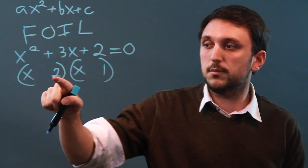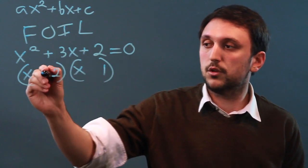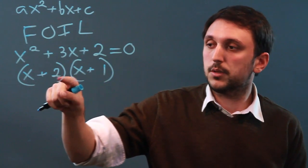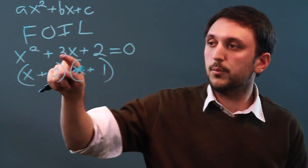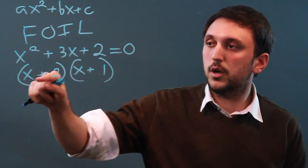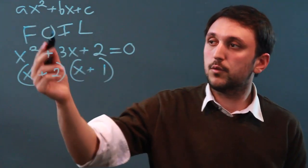So we know it's plus 2, so it has to be plus 2 here and plus 1 here. And let's see if that works. Plus 2. And then we need this plus 3x, so that's plus 2x and plus 1x, which is plus 3x. So that's how you FOIL.